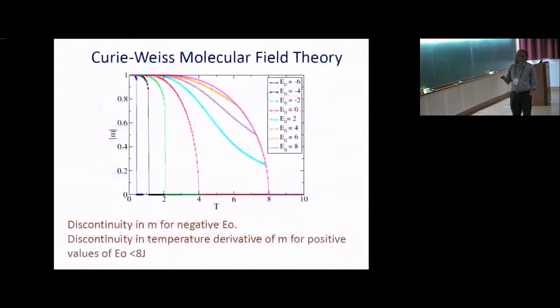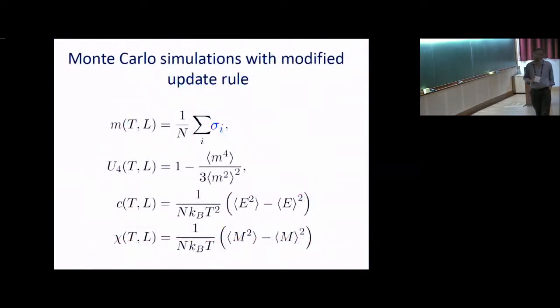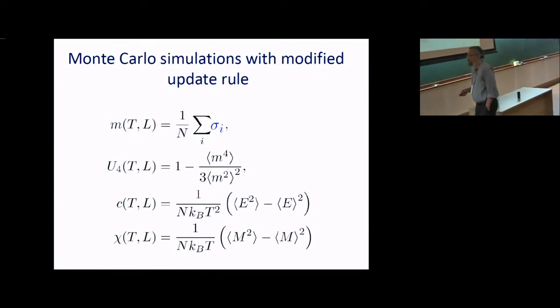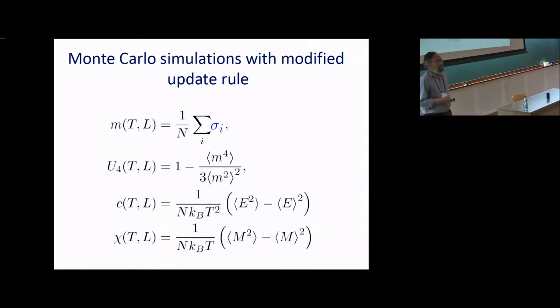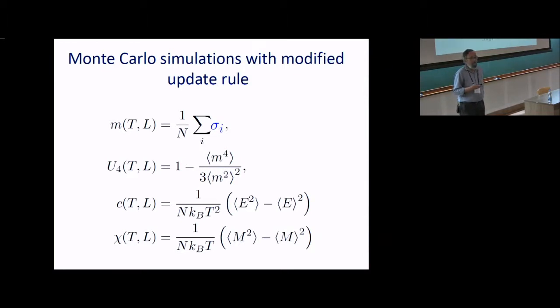In between, what happens is what we want to understand. What I want to show some results, is basically one can then study this model using Monte Carlo simulations with the new update rule for different values of these different choices of this E0, which is a positive system to go away from detailed balance. And one measures the usual quantities, the magnetization, and this is the binder cumulant. This is the heat capacity. For a non-equilibrium system, one has to define things. This heat capacity in general will not be the same thing as the rate of change of the internal energy with temperature. So we measure it through fluctuations. Similarly, susceptibility also we measure through fluctuations. The bottom line is that this model for different values of E0 also exhibits an order-disorder transition, which seems to be essentially the same universal class as what you have for the equilibrium Ising model.